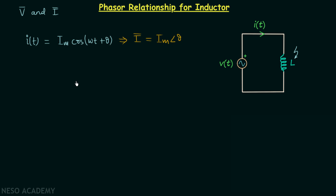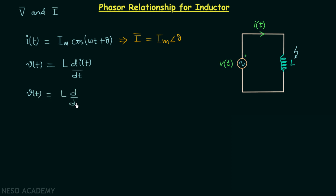We know that in the case of an inductor, the voltage across the inductor V(t) is equal to the inductance value multiplied by the derivative of the current through the inductor with respect to time. Since I(t) is equal to Im·cos(ωt + θ), we can say that V(t) is equal to L·d/dt of Im·cos(ωt + θ).